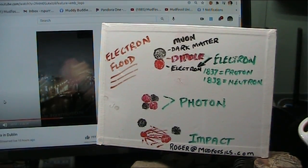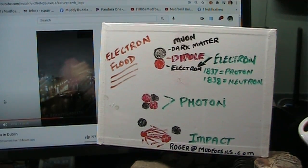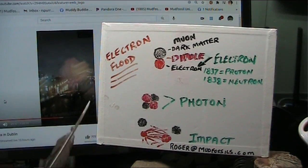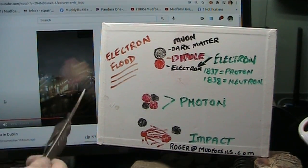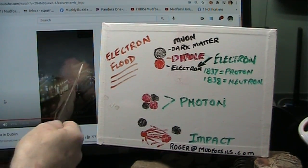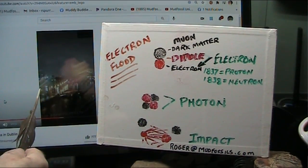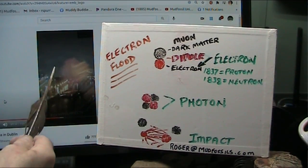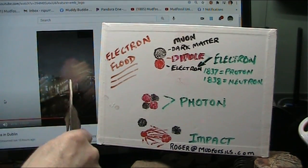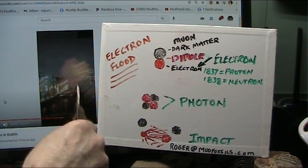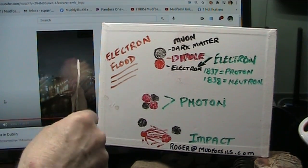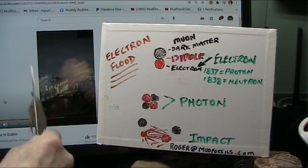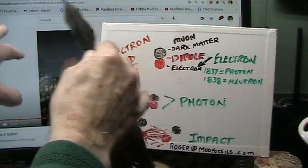Okay, my friends, Roger once again, Mud Fossil University. Apparently I'm being told this is a worldwide phenomenon. They're seeing these webs of light everywhere. Nobody can understand what's going on. And they flip around like this, and they bridge from the ground to light sources and all kinds of things — different colors and flashing webs.